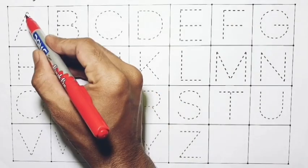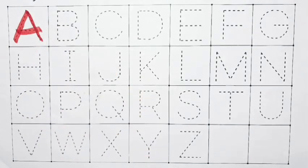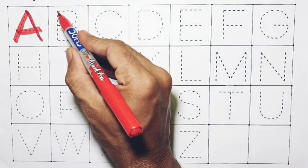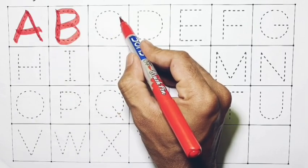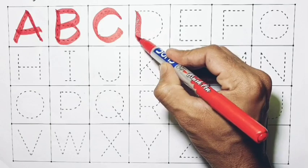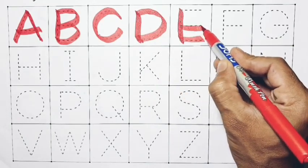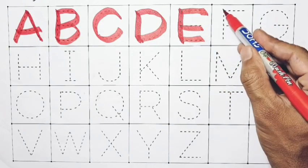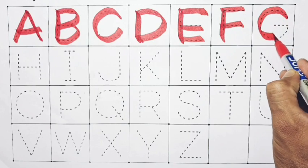Red color. A for Apple. B for Ball. C for Cat. D for Dog. E for Elephant. F for Fish. G for Grass.